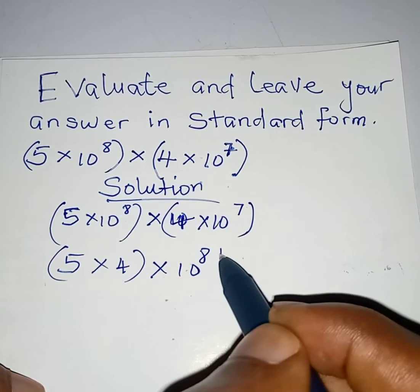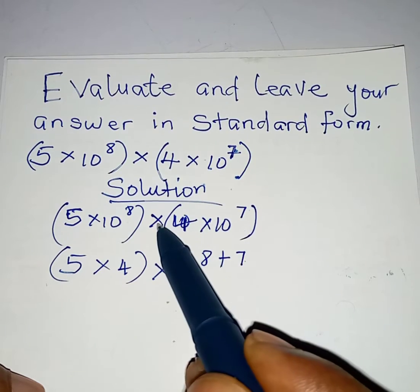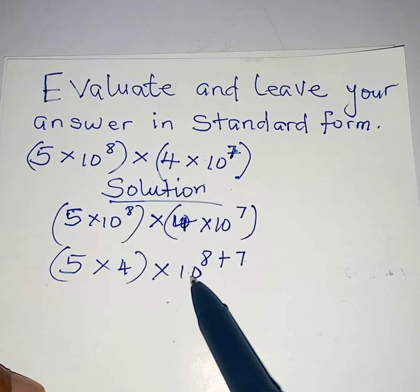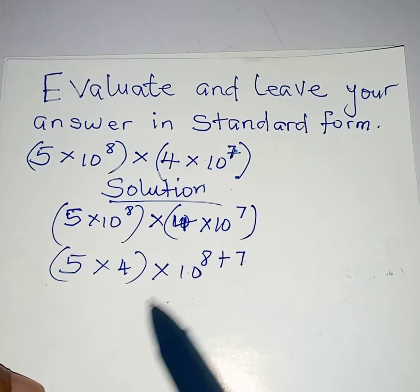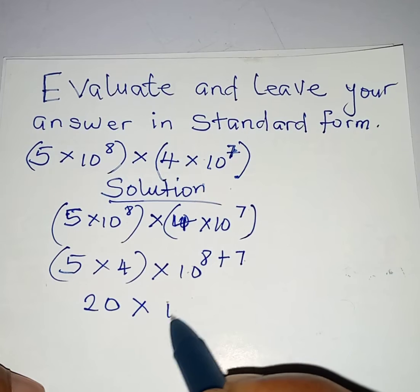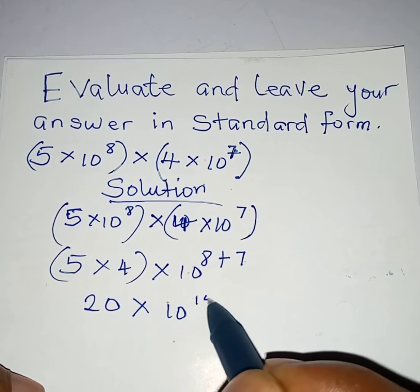So we have 8 plus 7 talking about the power of 10 because when you are multiplying, you pick one of the bases and add the powers. So this is going to be 20 times 10 raised to the power of 15.